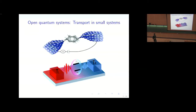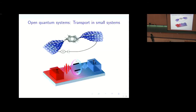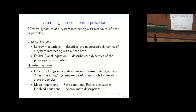These are the kinds of systems we would like to understand. In both cases, there is a system interacting with reservoirs at different chemical potentials or at different temperatures. To describe such non-equilibrium processes, we need an effective dynamics of a system interacting with reservoirs — these reservoirs could be heat reservoirs or particle reservoirs.